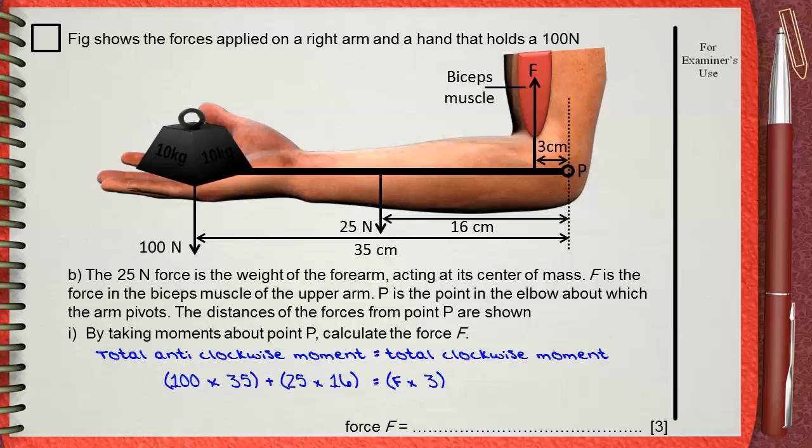This must equal F times 3 centimeters. F is the force of the biceps, and 3 is the distance to the pivot. By calculating this, you will find that the force F in the biceps equals 1300 newtons.